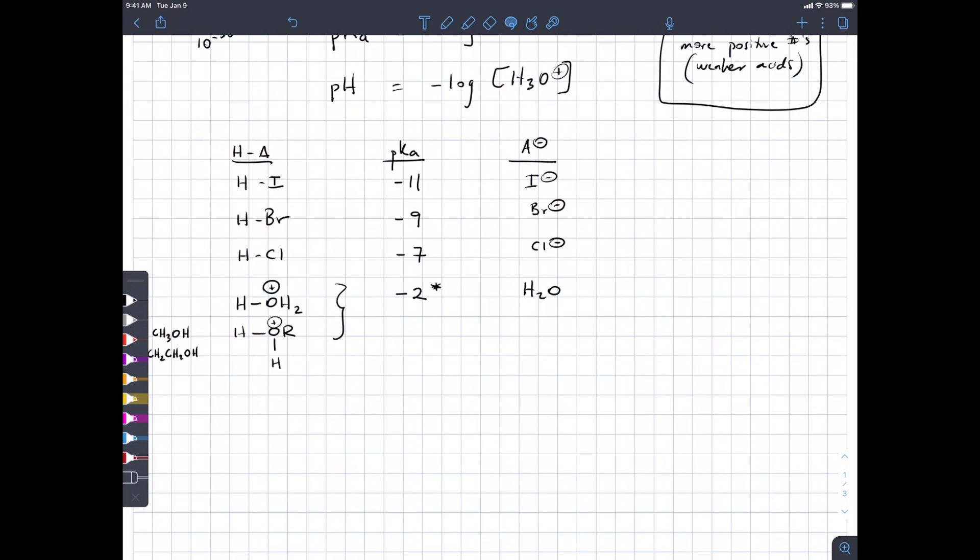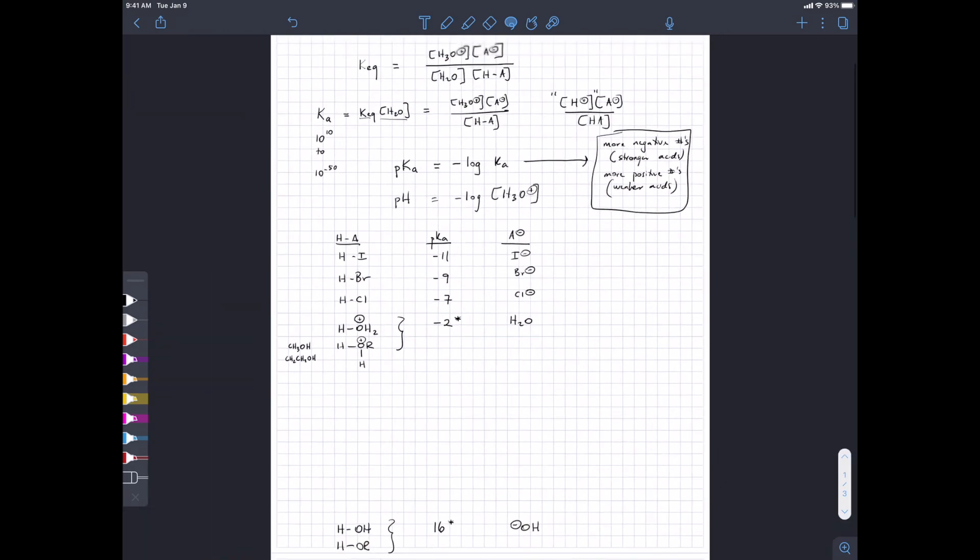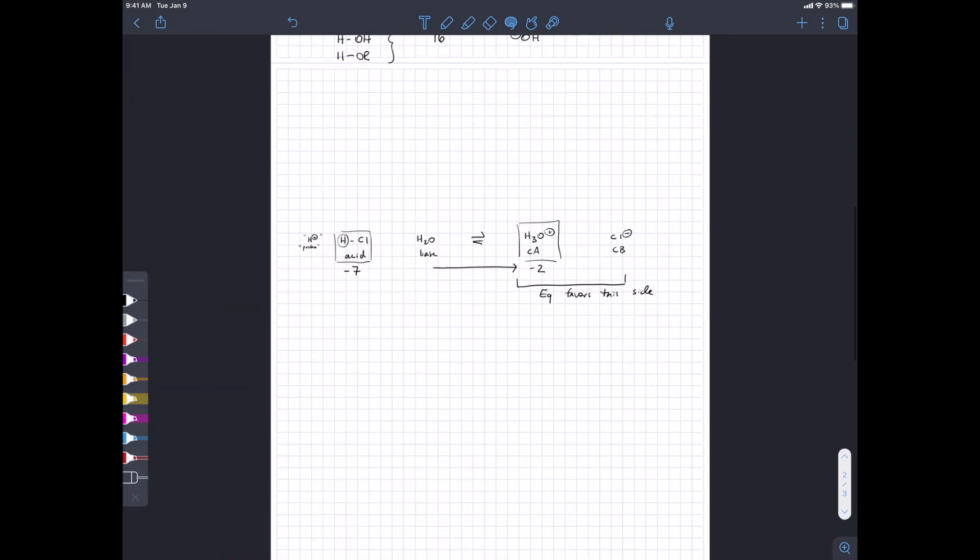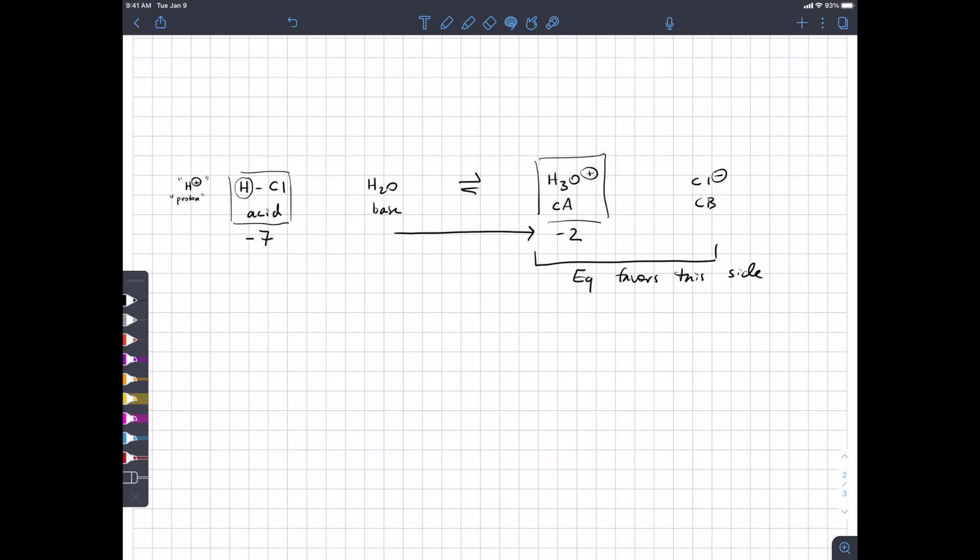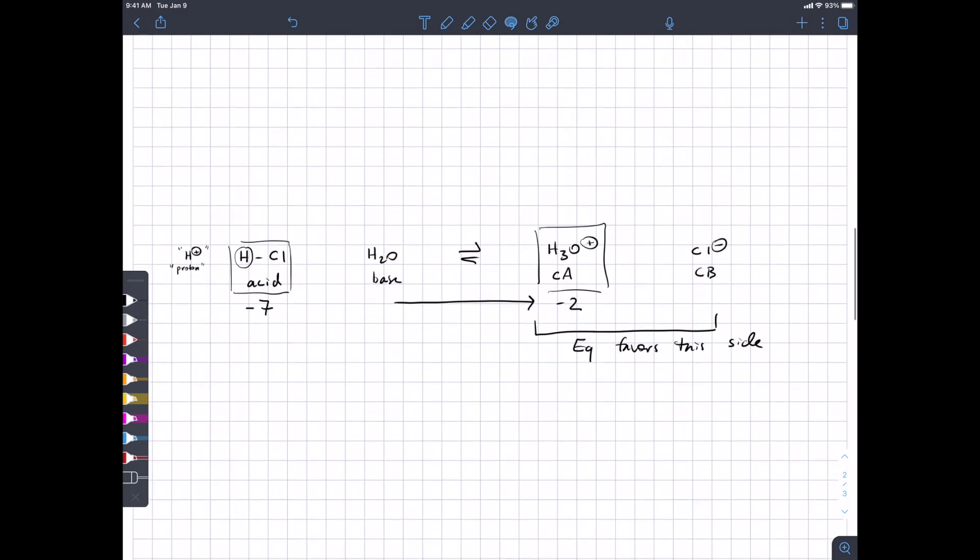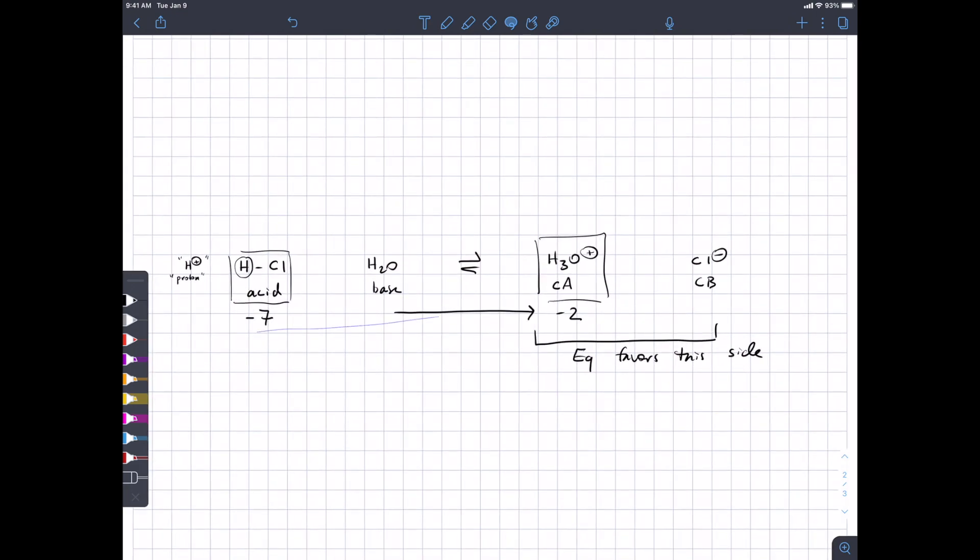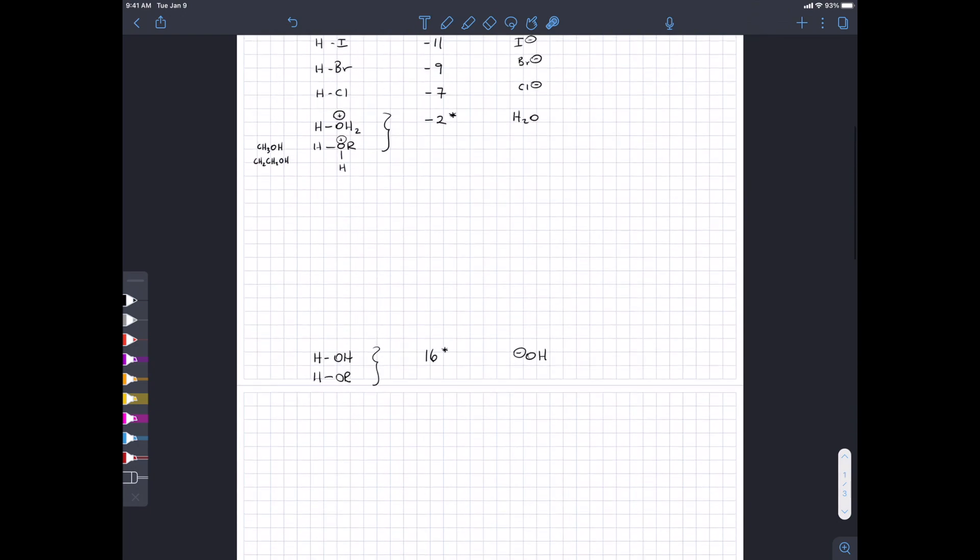Okay, we'll go ahead and start back up. So we just reviewed acid-base equilibrium and how to decide what's more acidic than the other. You write out the equilibrium, identify the acids on both sides, find their pKa values, and then the strongest acid wins or loses its proton.